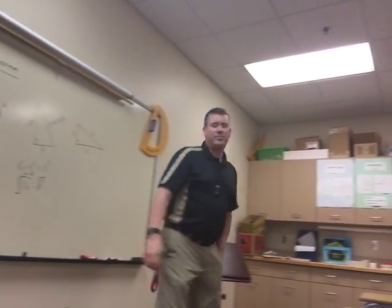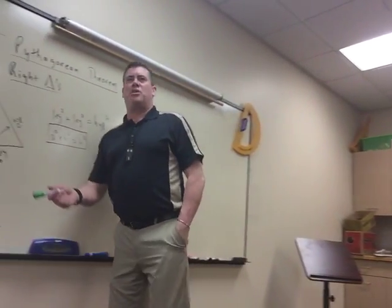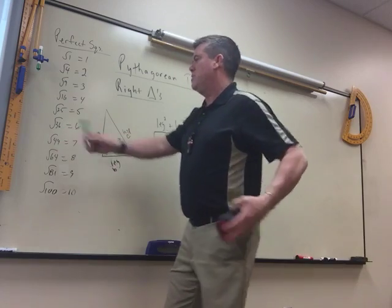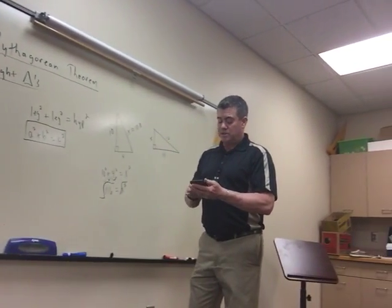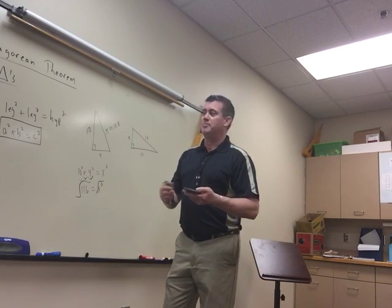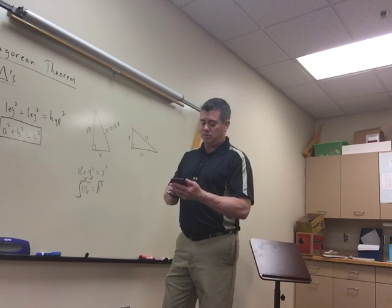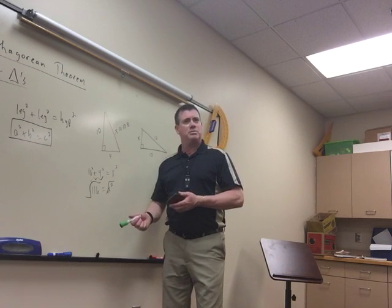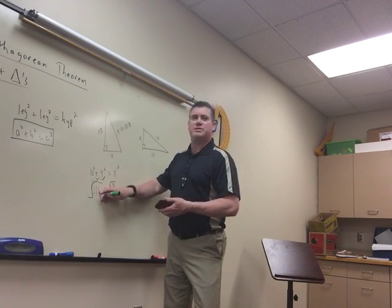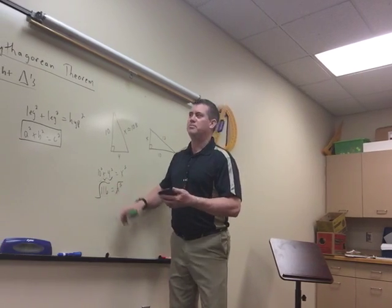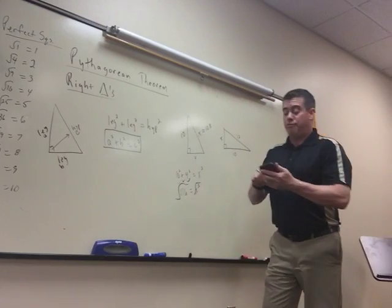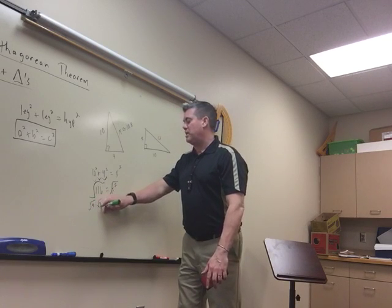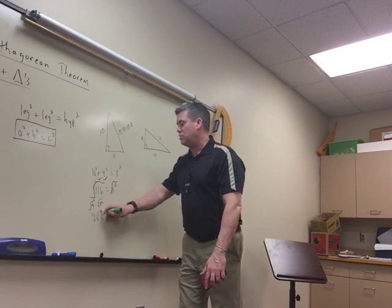For √116, start about halfway — 64 is more than half so that doesn't go in. 49 doesn't go in. 36: 116 divided by 36 doesn't go in evenly. 25 won't work. 16 — nope. 9: add the digits, 1+1+6=8, and 9 doesn't go into 8, so no. But 4 goes in 29 times, so this breaks up into 4 × 29, which simplifies to 2√29.